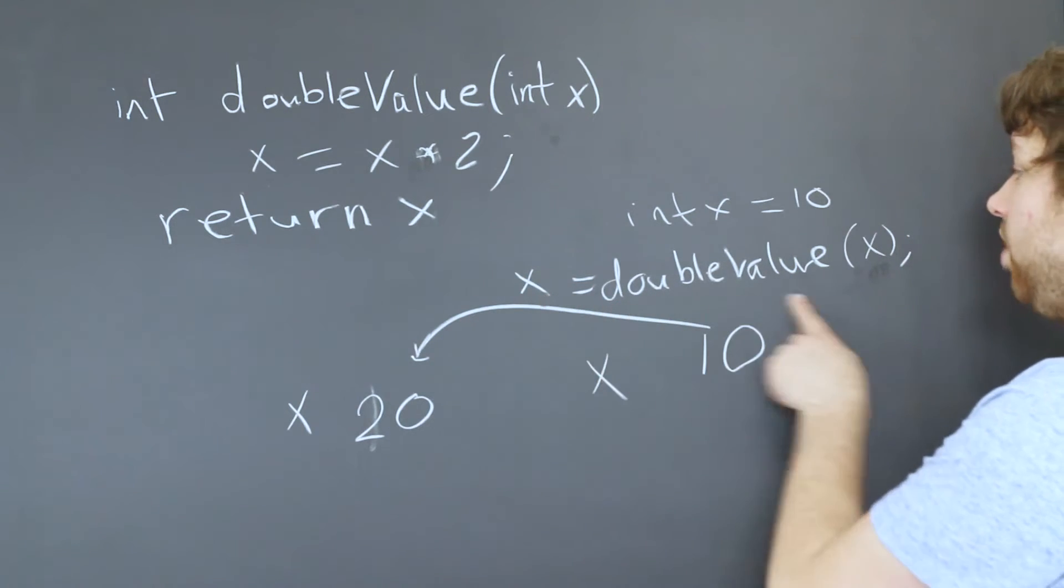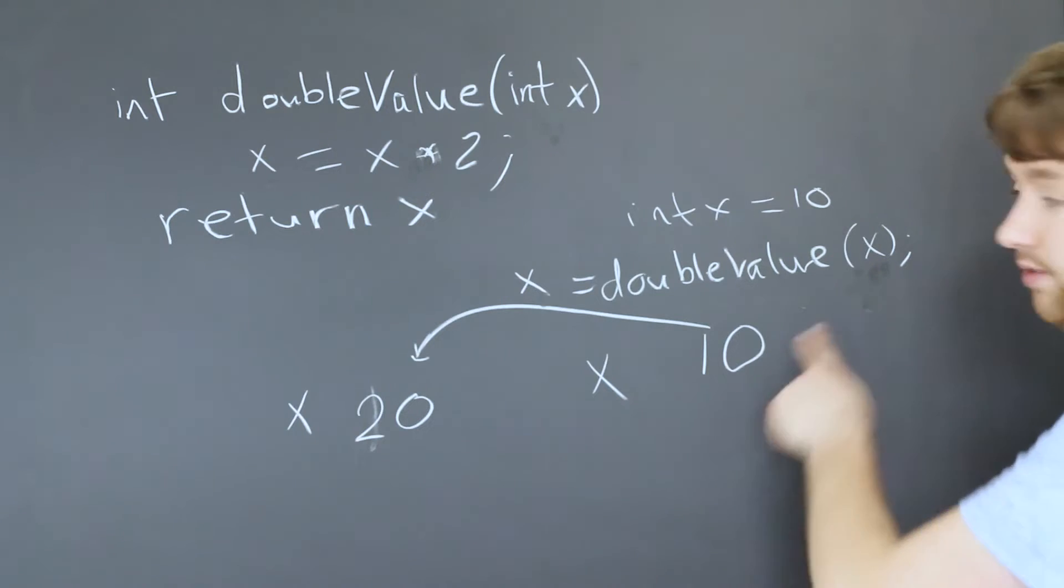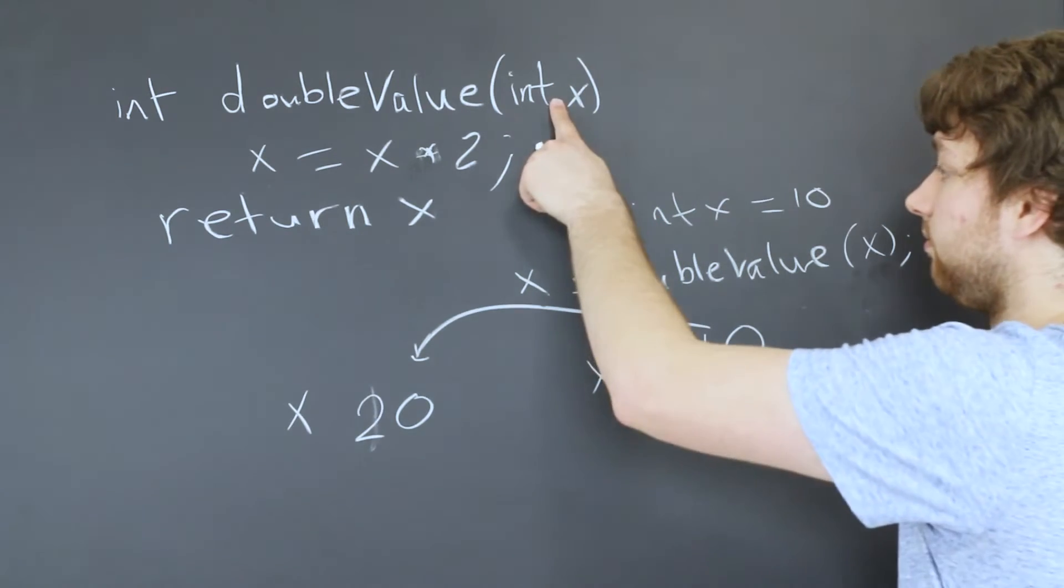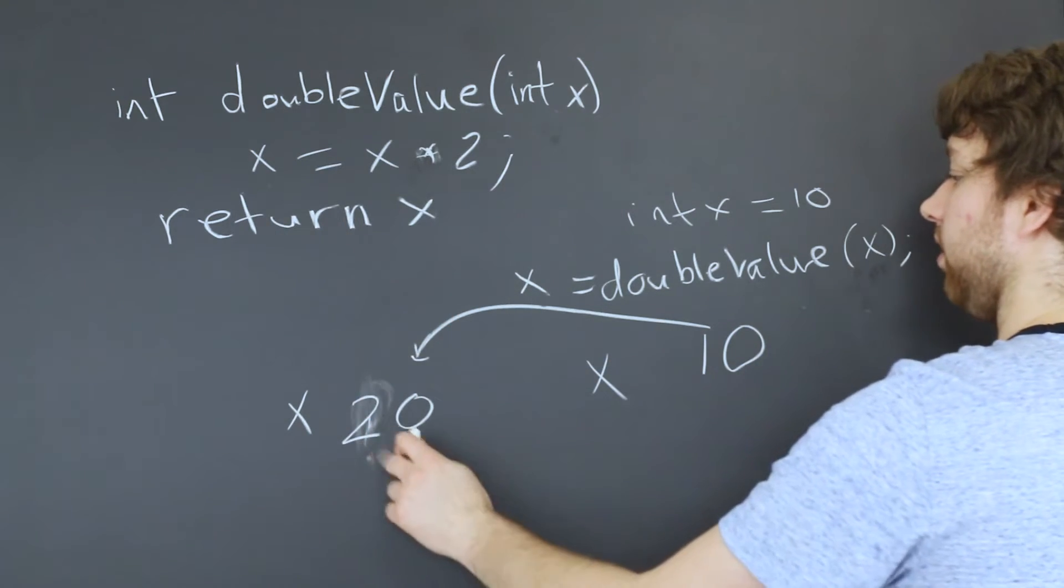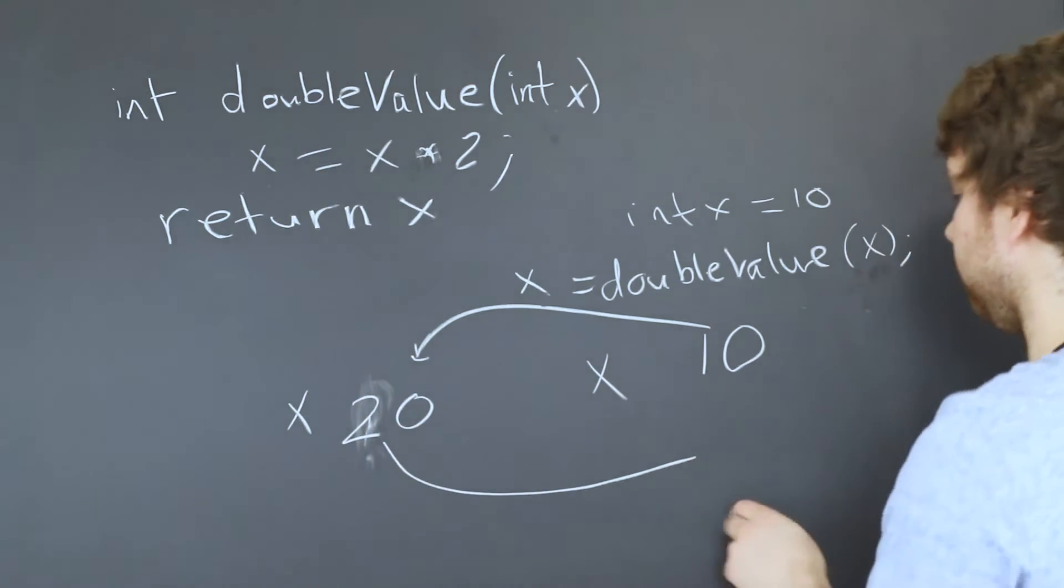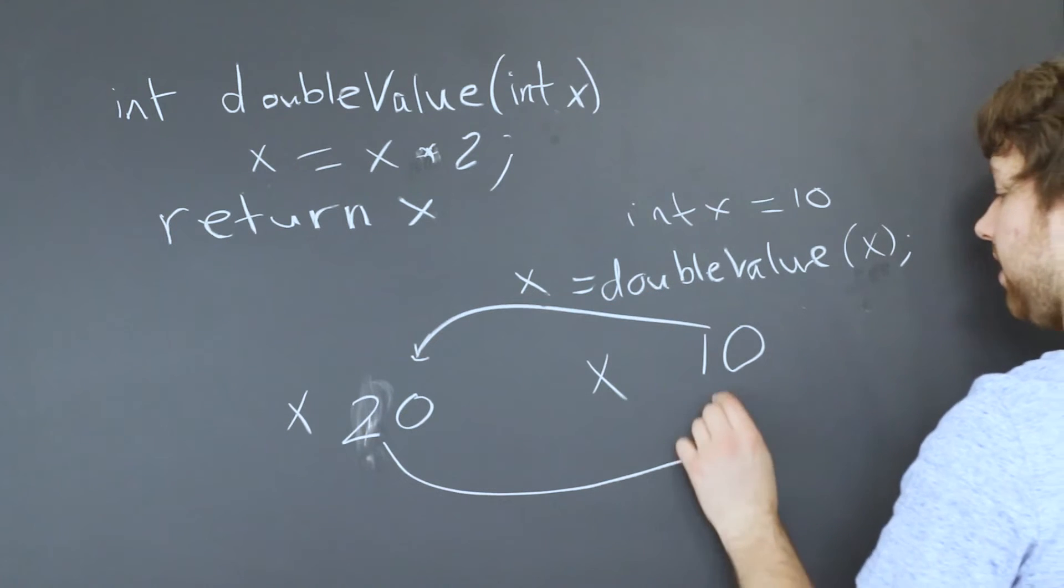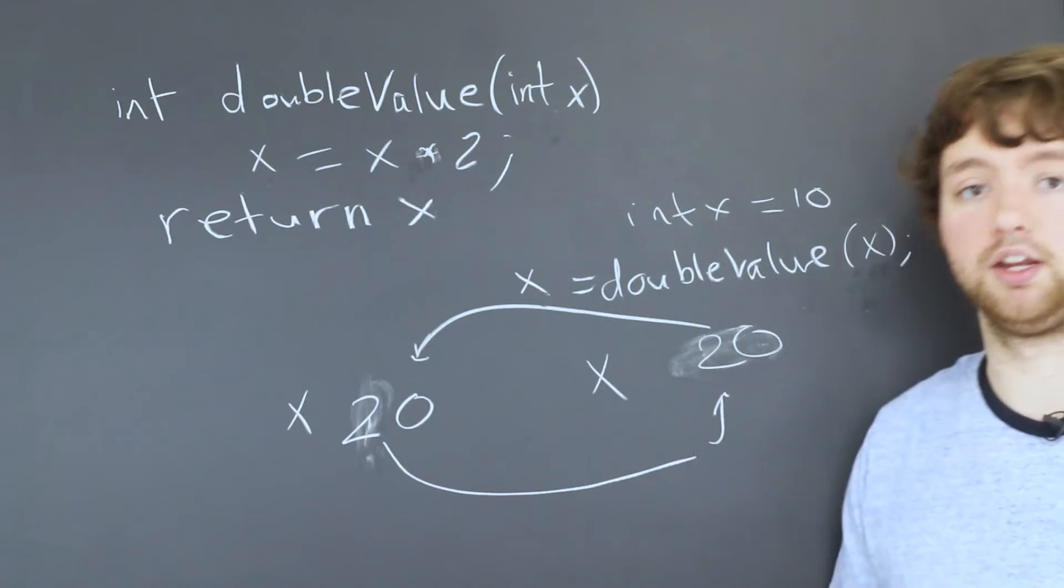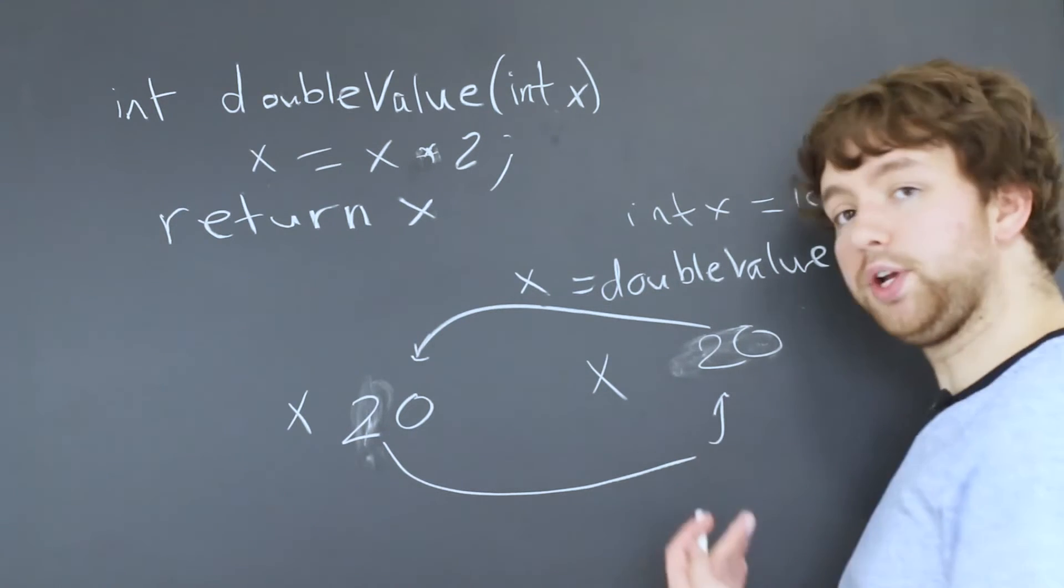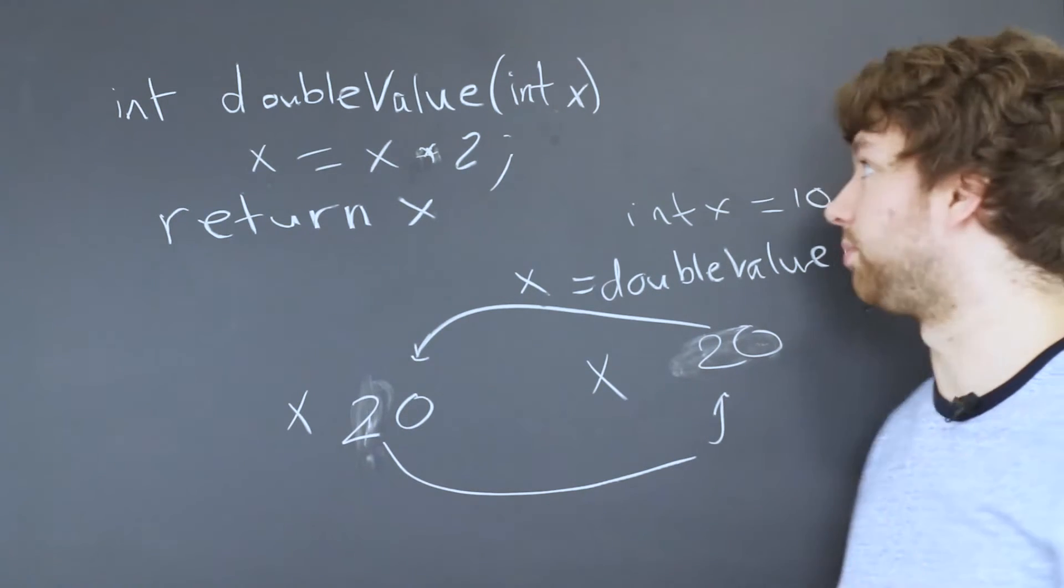So x is now double x. That gets passed in as 10. It's doubled to 20. Then we return that. And then we assign that back to x to equal 20. Much more complicated. If we just wanted to use pointers, it would be a lot more simple. And that's what I'm going to show you now.